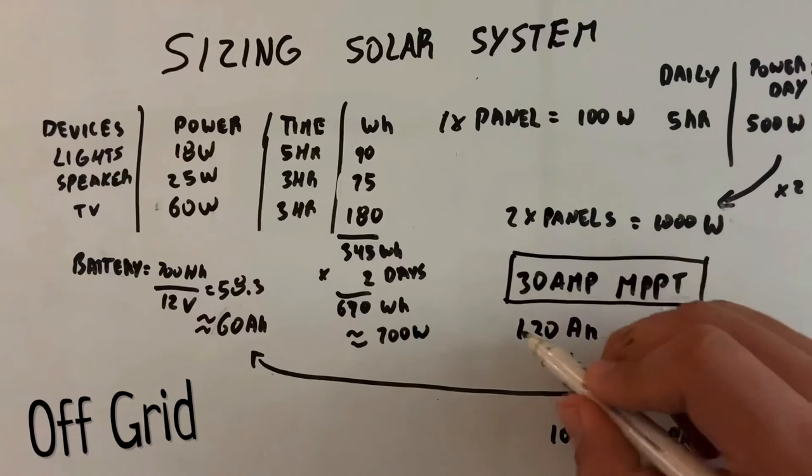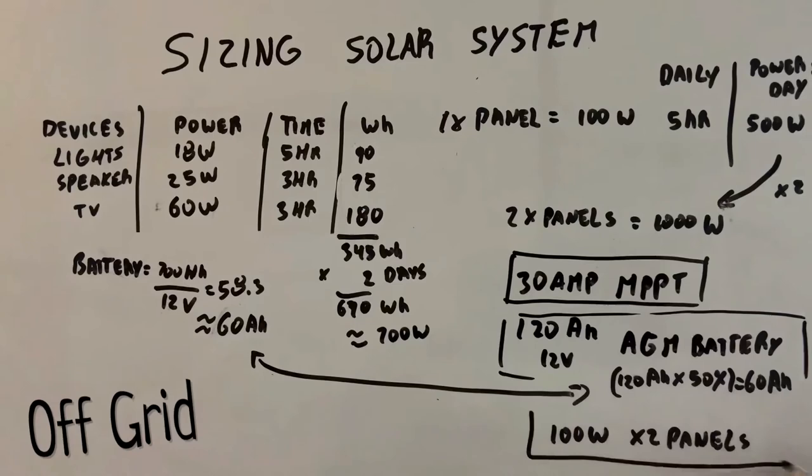So far we have the 30 amp MPPT charge controller. We have a 120 amp power 12 volt AGM battery and two solar panels. The last thing we need is an inverter.